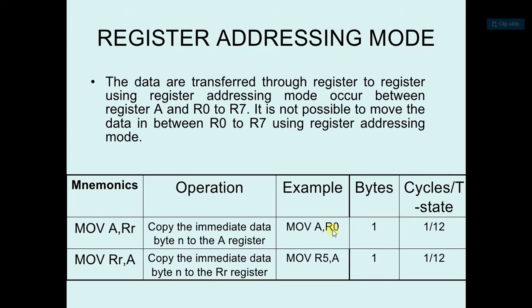So this is the register addressing mode. The difference between immediate addressing mode and register addressing mode is the data is provided in the instruction in immediate addressing mode, and data needs to be fetched from the register in register addressing mode.